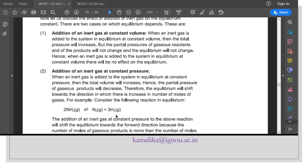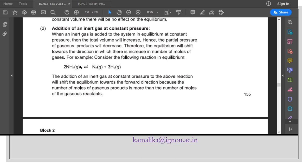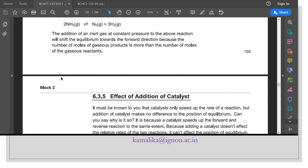If you take this reaction, the addition of inert gas at constant pressure will shift the equilibrium towards the forward reaction, because the number of moles of gaseous products is more than the number of moles of gaseous reactants. Here it is 4 moles and reactants is 2 moles.